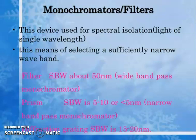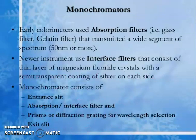Monochromator or filter: this device is used for spectral isolation of light of a single wavelength by selecting a sufficiently narrow waveband. Types include: filter (SBW ~50 nm, wide bandpass monochromator), prism (SBW 5–10 nm or less, narrow bandpass monochromator), and diffraction grating (SBW 20–50 nm).